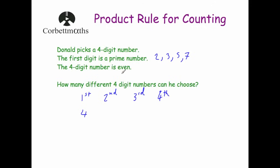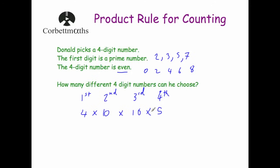The four-digit number must be even, which only affects the last digit. To be even it must end in 0, 2, 4, 6, or 8 — so there are five options for the fourth digit. The second and third digits have no restrictions, giving 10 options each. Multiplying together: 4 × 10 × 10 × 5 = 2,000. So there are 2,000 different possible four-digit numbers that Donald could choose.